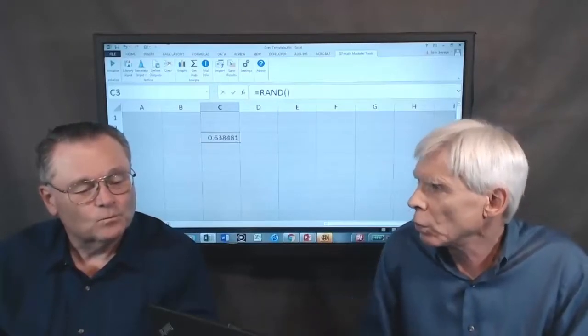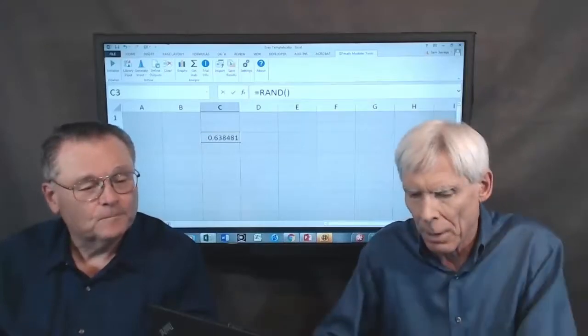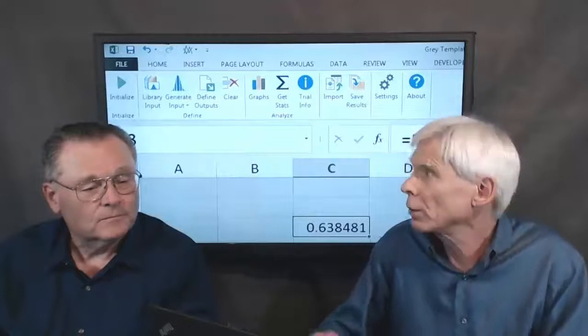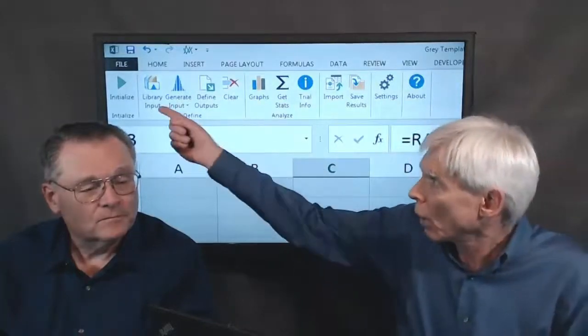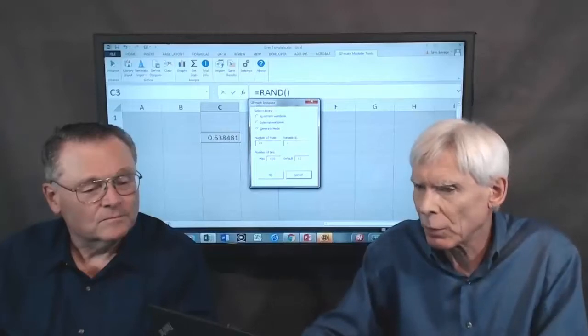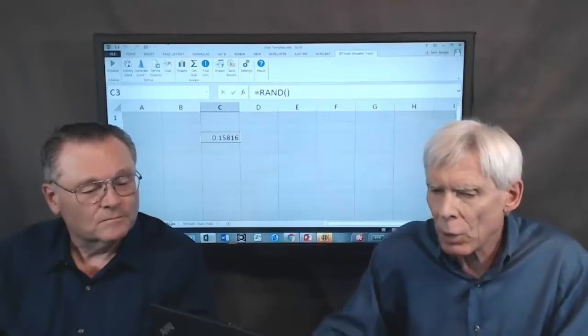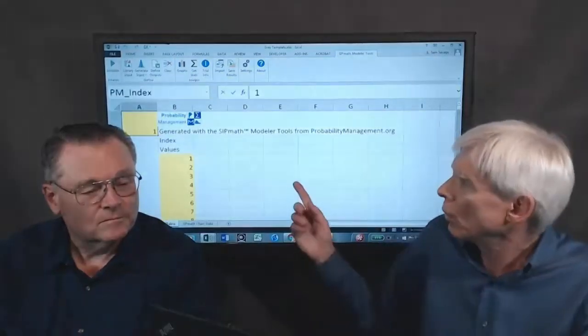But we're going to use the tools to spin this a thousand times every time I press the F9 key. Well, the toolbar is up here, and we'll start with initialize. So this sets up the model. It asks us for a number of trials—we'll do a thousand trials. Click OK, and it creates a new sheet called PM table.